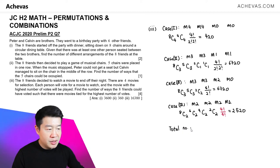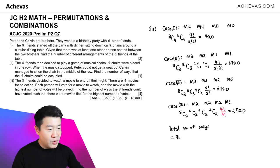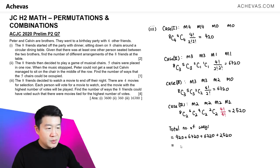So the total number of ways will be adding up the number of ways for each of the cases: 420 plus 6,720 plus 6,720 plus 2,520. And this will give us our final answer of 16,380.